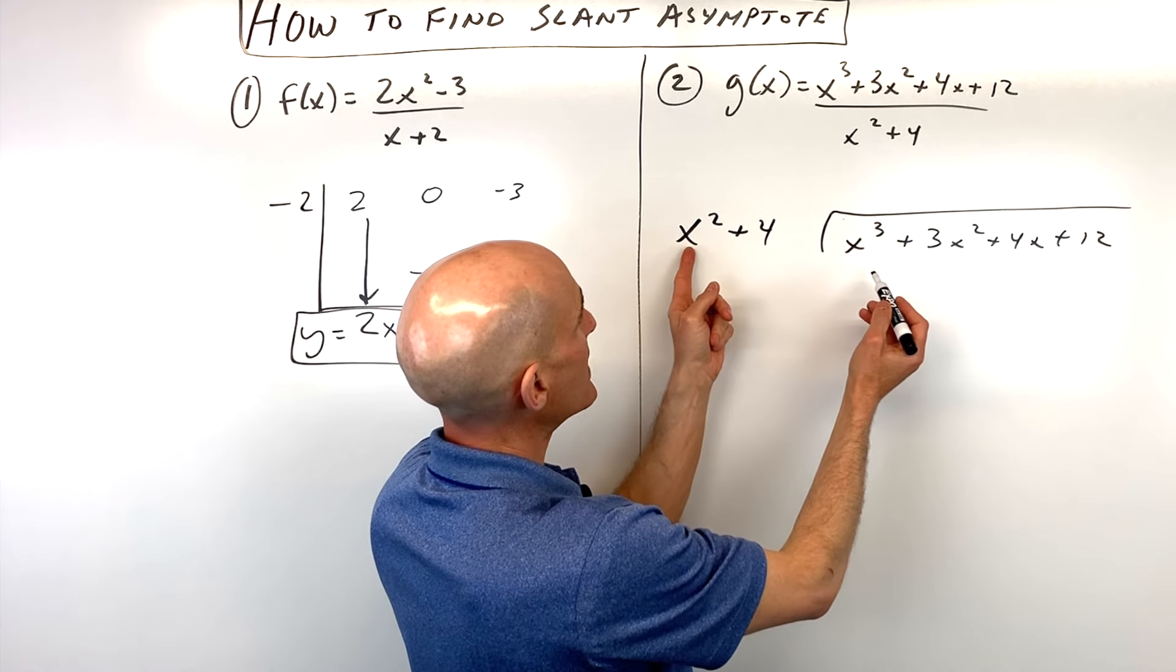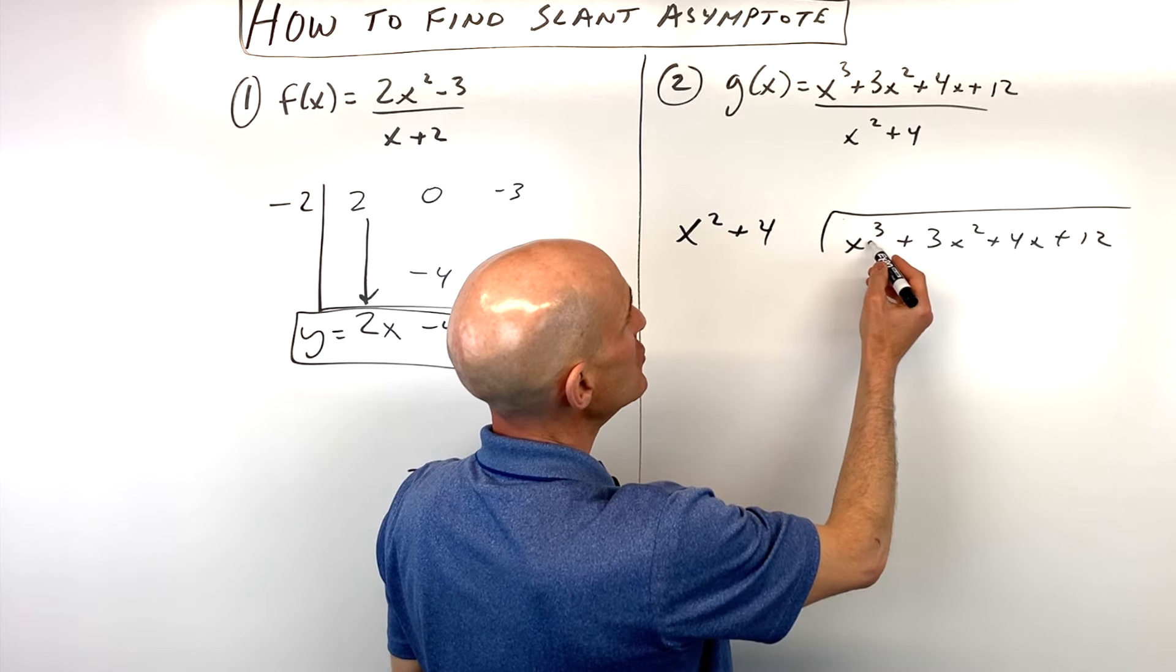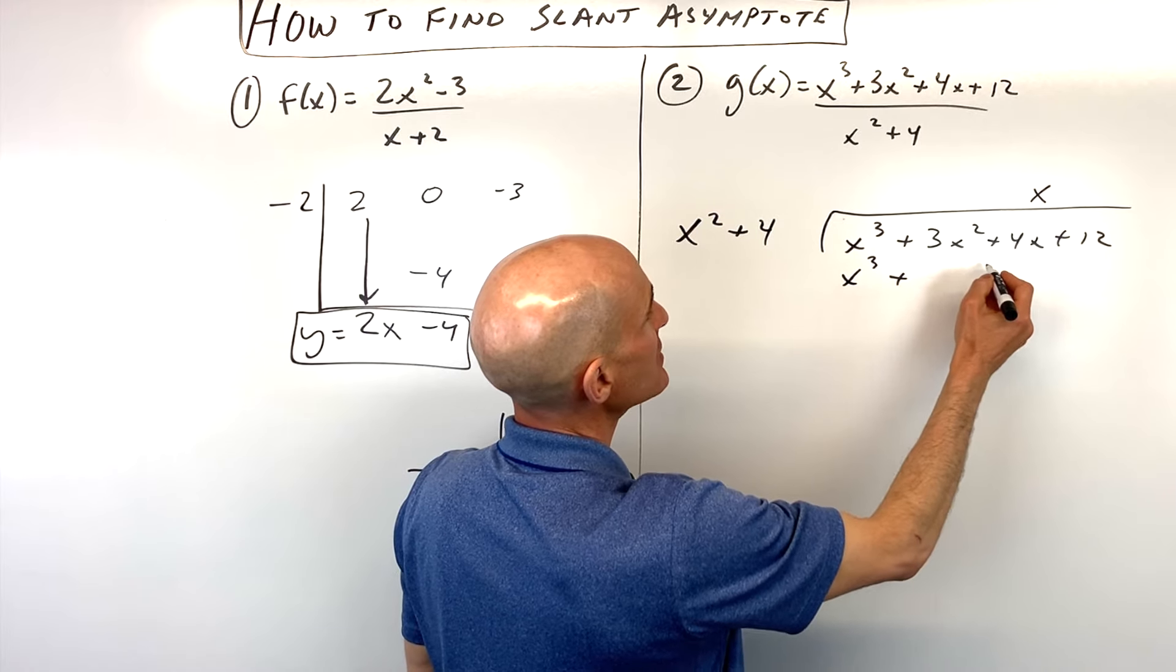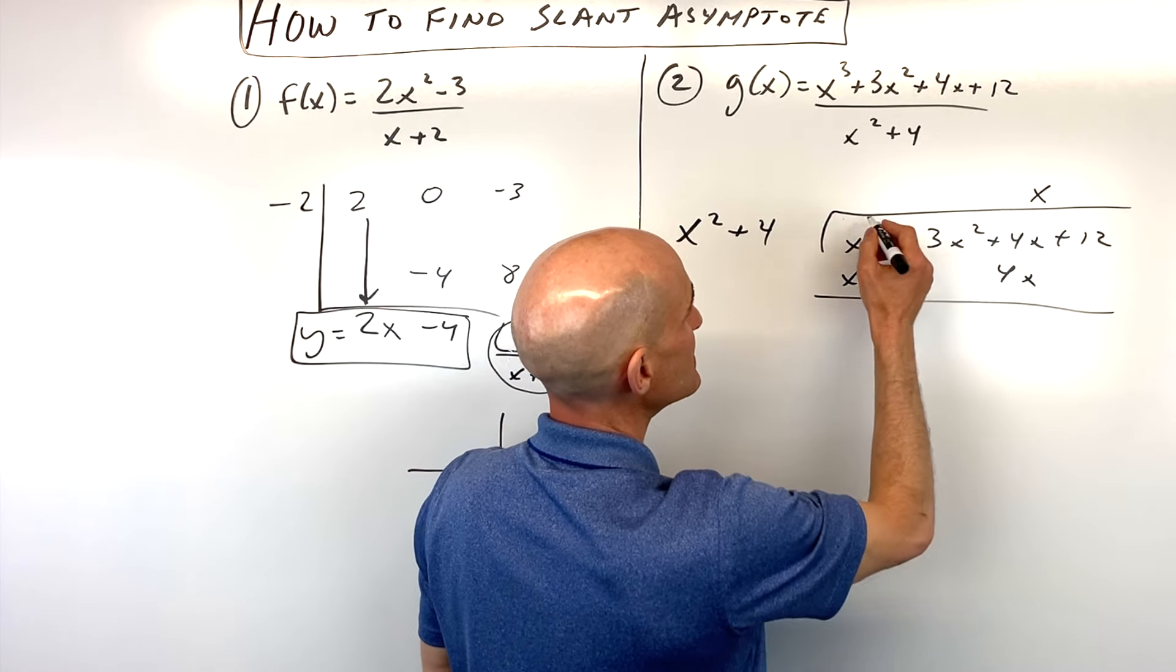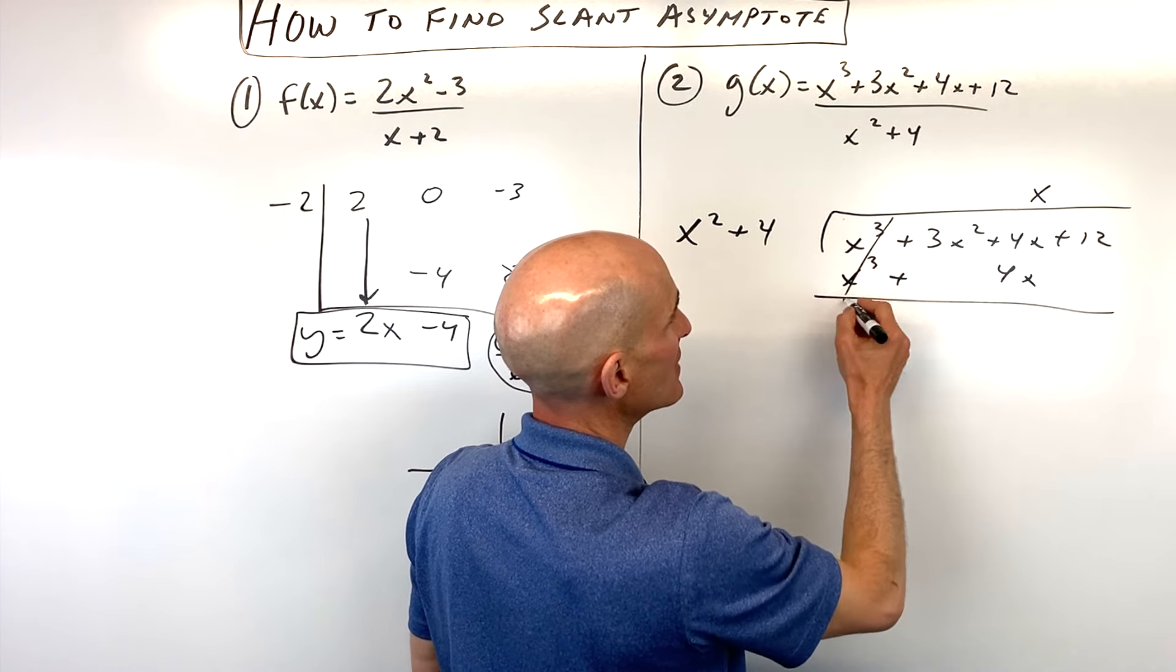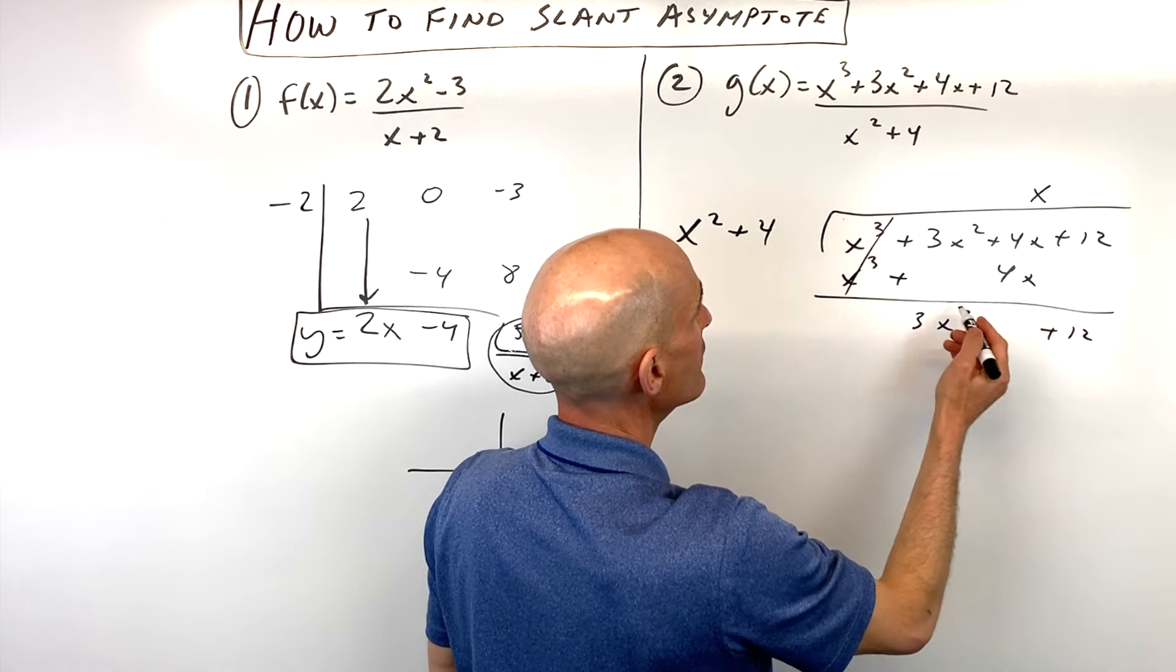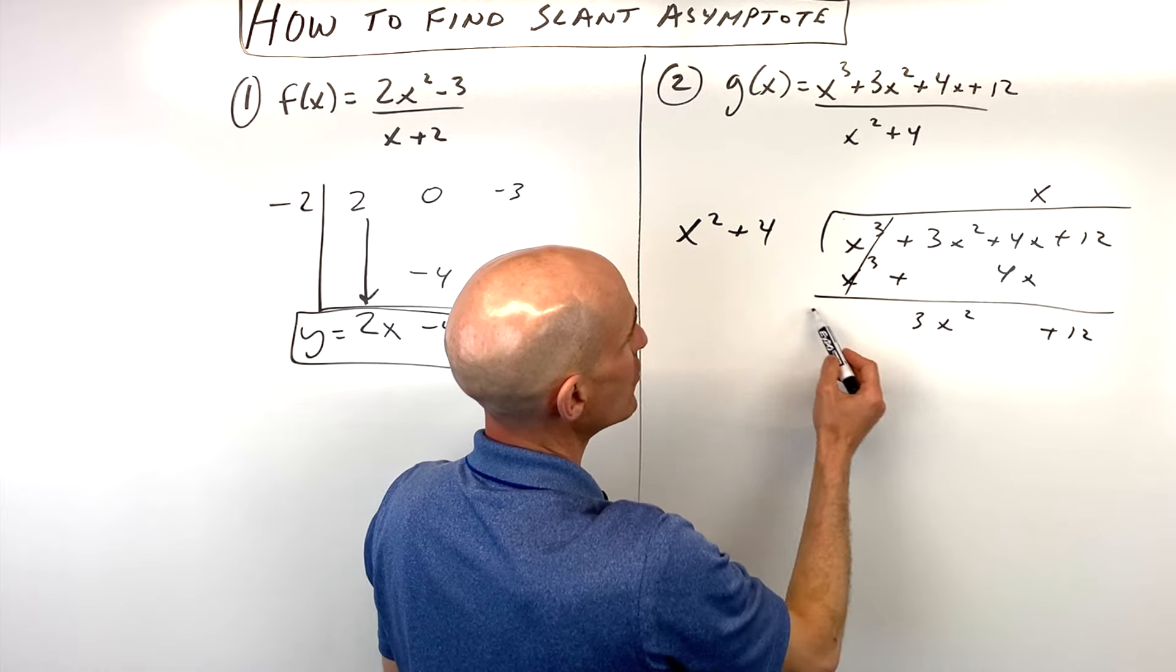We're going to do the long division. So x squared goes into x cubed how many times? That's one time. I distribute the x. I get x cubed plus 4x. I subtract. Okay, so these are going to cancel. This gives us 3x squared plus 12. And then how many times does x squared go into 3x squared?